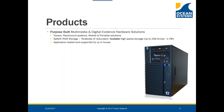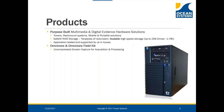Our high-speed RAID storage is SAS 3 connected, scalable, redundant, with up to 4800 megabytes per second read/write speeds — extremely fast. We can scale beyond one petabyte by daisy-chaining units. All of our systems are application-tested and supported by us in-house. The system pictured here is a custom tower with a hardware write-blocker built in, as requested by a customer leveraging it for digital evidence applications like InCase and FTK. We also have Omnivore and Omnivore Field Kit — our uncompressed screen capture solutions for acquisition and processing.